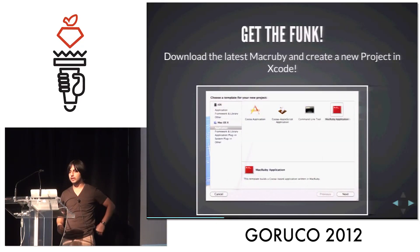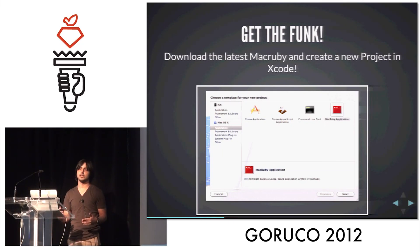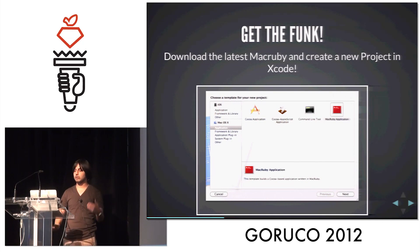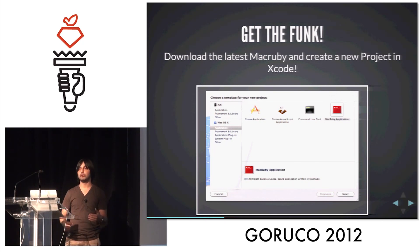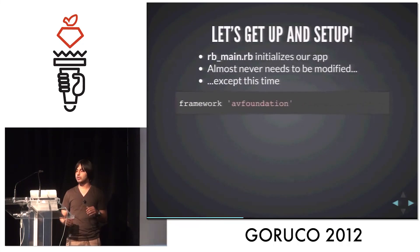So the first thing we're going to do — get the framework. You're going to download it. The best thing to do is download a nightly build; I like to do the nightlies because they're actually fairly stable, in my opinion. Get it off the website, install it, and then when you go to Xcode and create a new project, you'll actually have a MacRuby application template, and you're pretty much good to go.